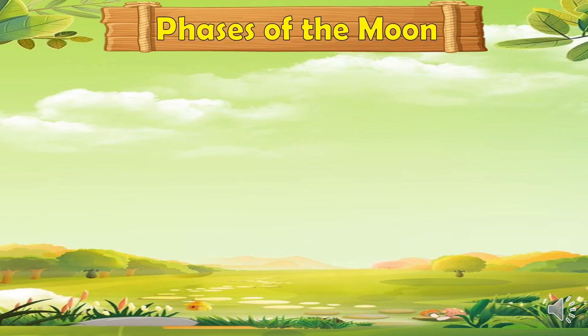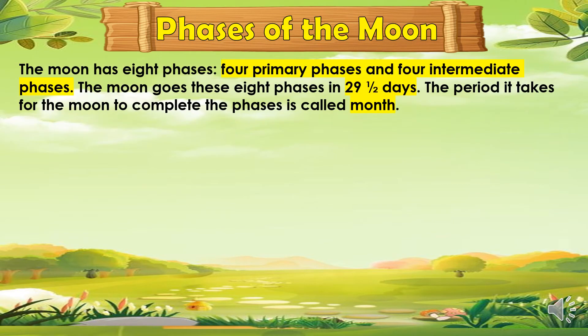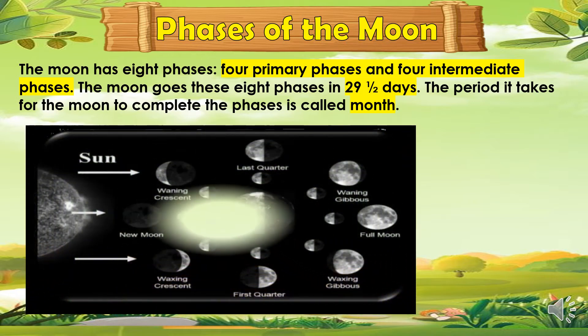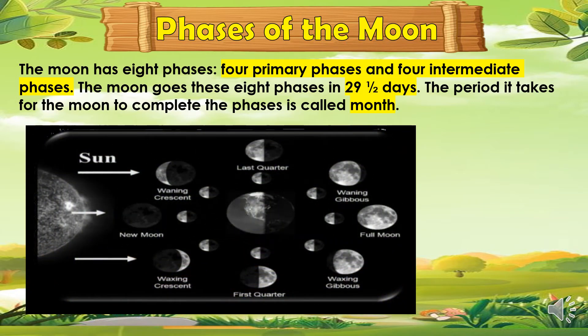Now, what are the phases of the moon? The moon has 8 phases: 4 primary phases and 4 intermediate phases. The moon goes through these 8 phases in 29 and a half days. The period it takes for the moon to complete the phases is called a month.